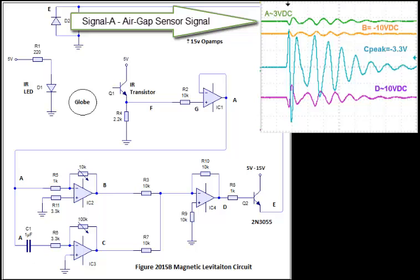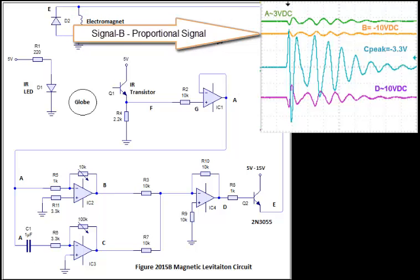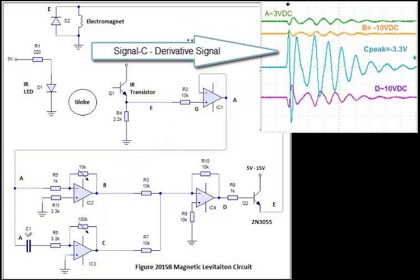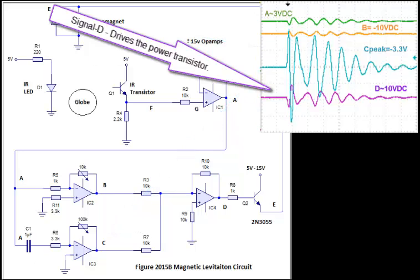Signal A is the air gap sensor signal. Signal B is the proportional signal. Signal C is the derivative signal. Signal D drives the power transistor.